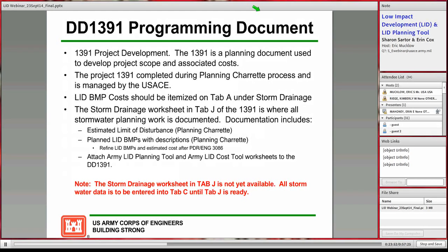For the 1391 programming document, Bill Sproul with ACSIM is working to add a worksheet on Tab J, the storm drainage section, to input details of LID BMPs selected for compliance with EISA Section 438. For right now we're going to use Tab C with a narrative that includes the estimated limit of disturbance — whether you're above 5,000 square feet — the planned LID BMPs with description, and cost estimate. As you go through the PDR and DD Form 3086 phase, you can refine the BMPs and cost. Worksheets from the planning tool and cost tool can be printed and attached.